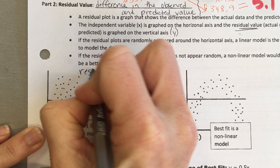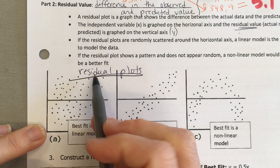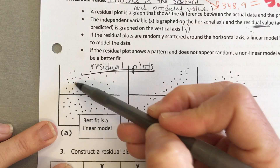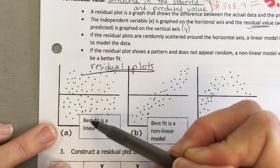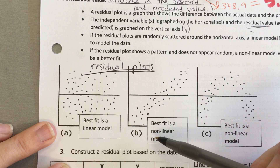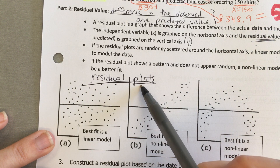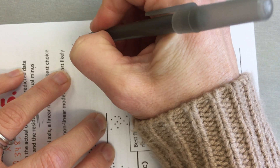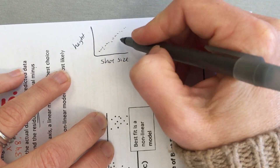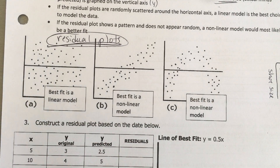These are residual plots — not original scatter plots. When you see a residual plot, if it is randomly scattered, then the best fit is a linear model. If it is not randomly scattered, then it's a non-linear model. If it was an original scatter plot — like shoe size on x and height on y — a clustered pattern would be linear. But if they give you a residual plot and want to know if it's linear, you want one that is randomly scattered.